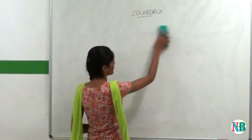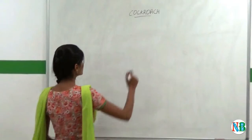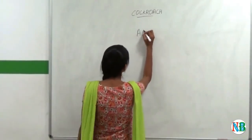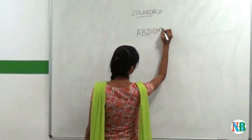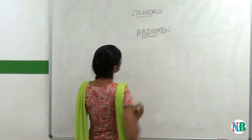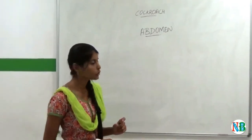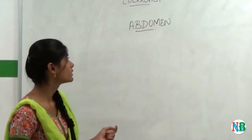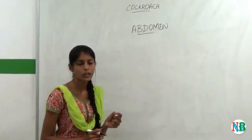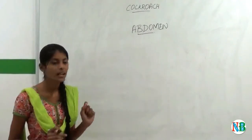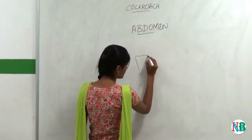Now we will see abdomen. Abdomen is the largest part in cockroach. Nearly 10 segments come in abdomen. At the end of the 10 segments, there will be two filamentous structures called anal cerci. So consider this as the lowest part of the abdomen.